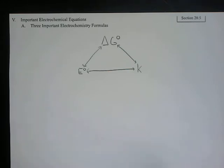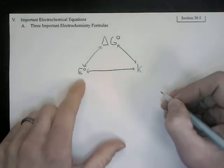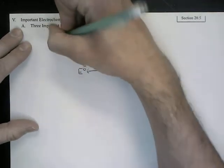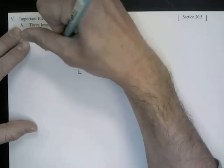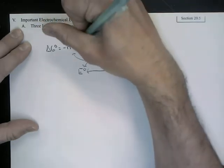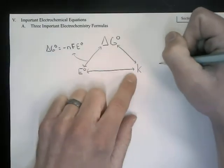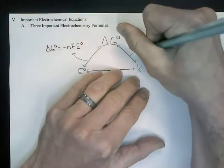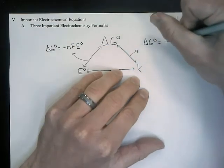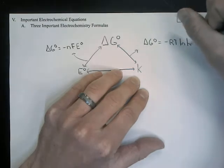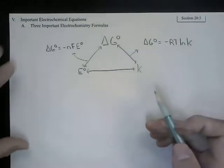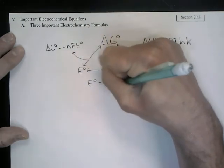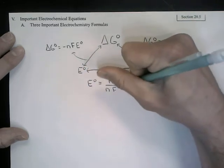How can we tie these things together? We have three different formulas. Tying together ΔG and standard cell potential: ΔG = −nFE°cell. Tying together ΔG and K: ΔG = −RT ln K. And tying together cell potential and the equilibrium constant: E°cell = (RT/nF) ln K.